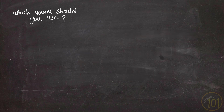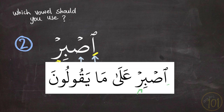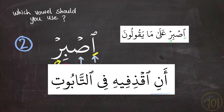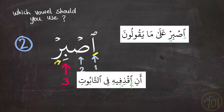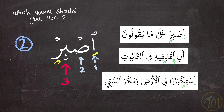Next, if the third letter has Kasra, this means that Hamzat Wasl will also get Kasra — like in these examples. As you can see, the third letter of each of these words has a Kasra under it. So when I start at the word, I will put Kasra under Hamzat Wasl and pronounce it fully.